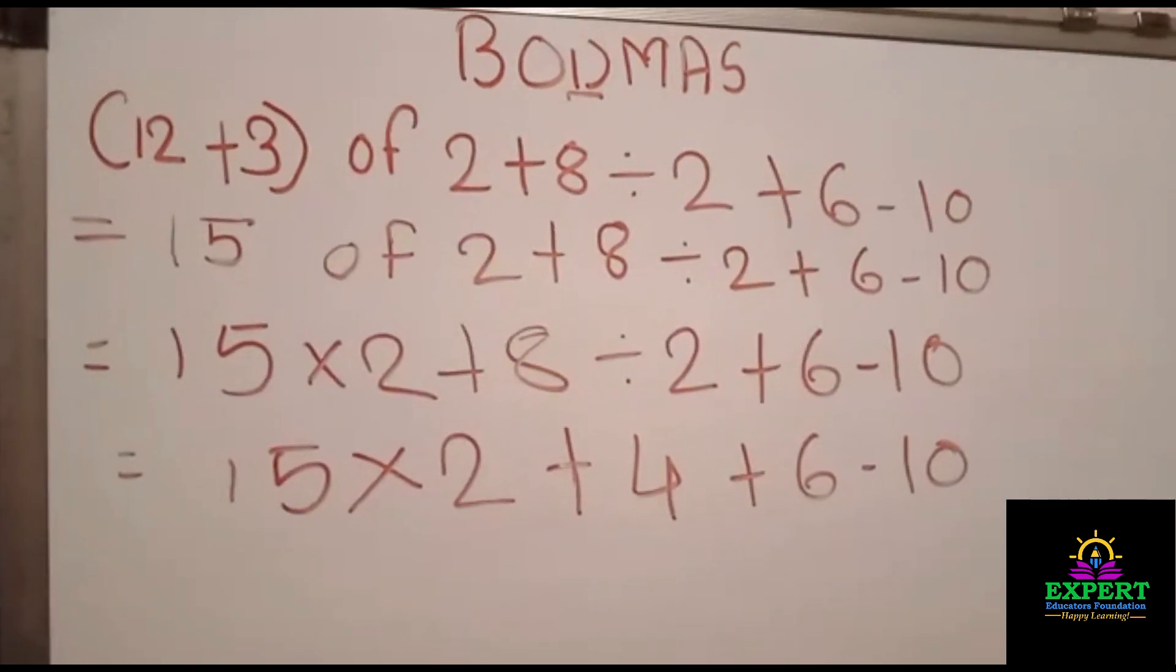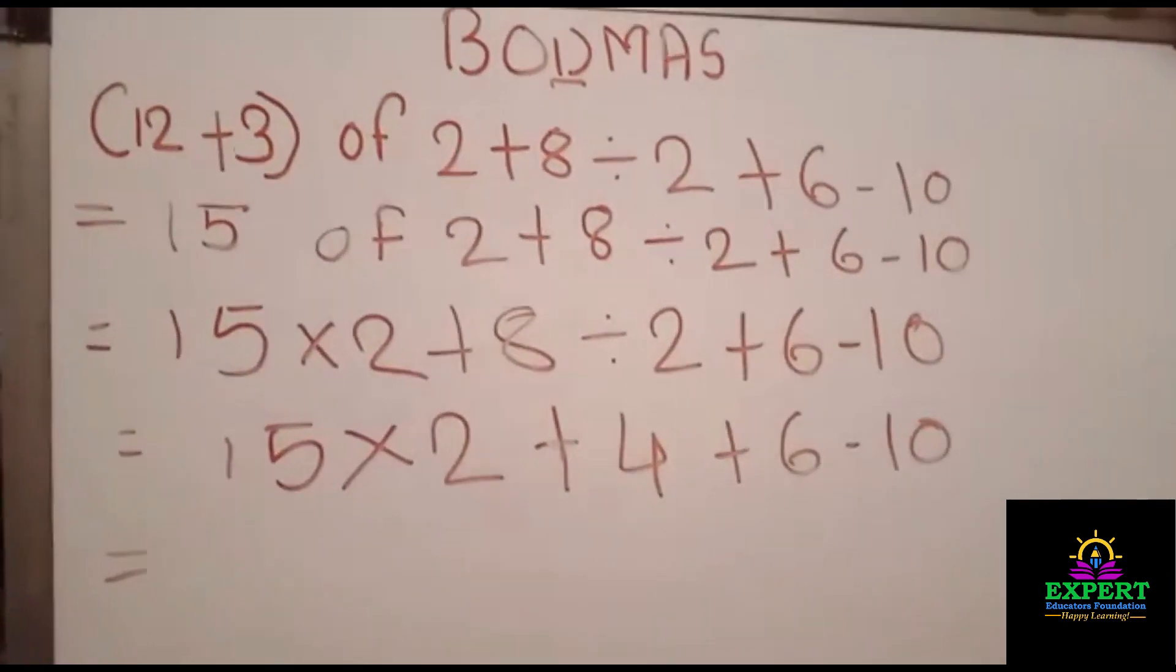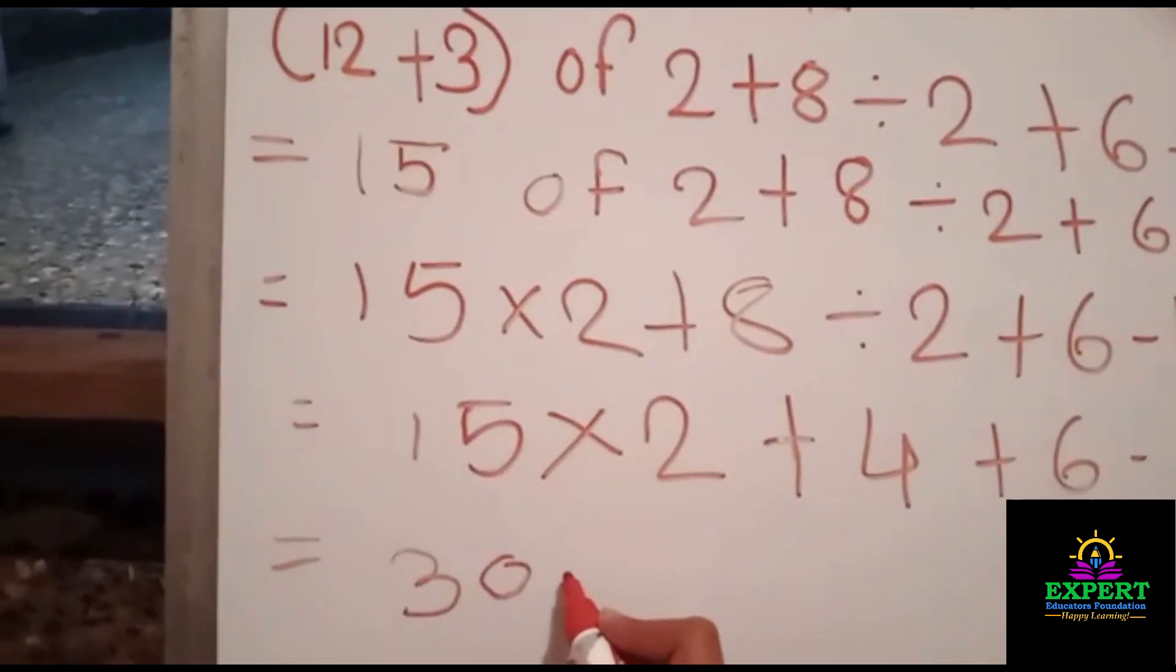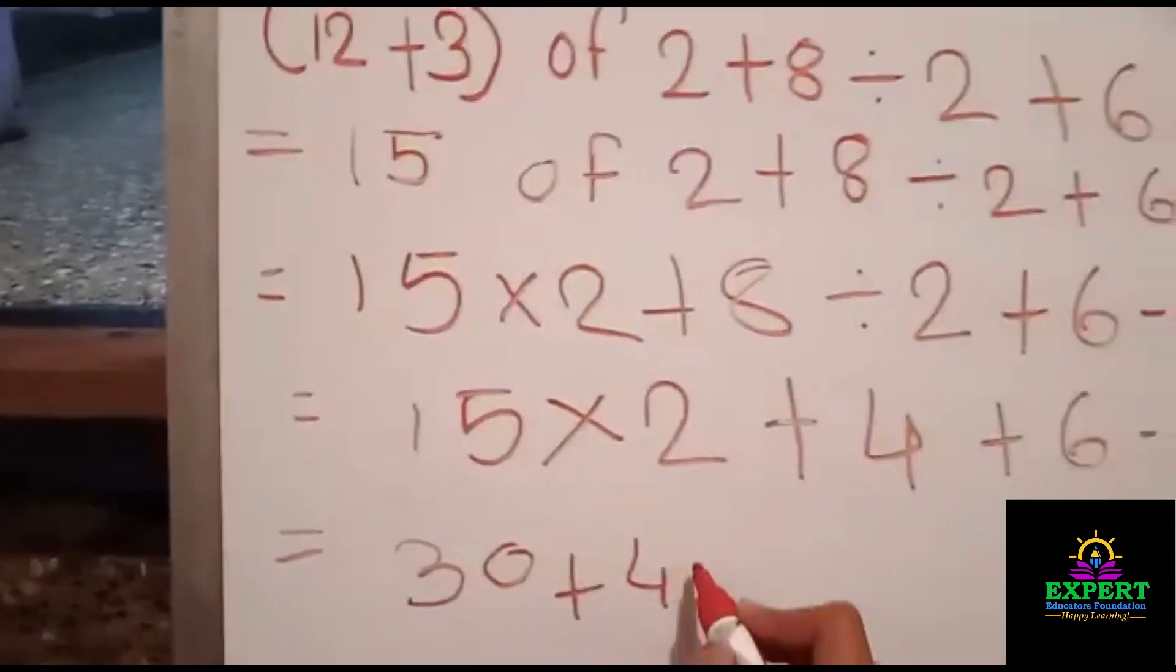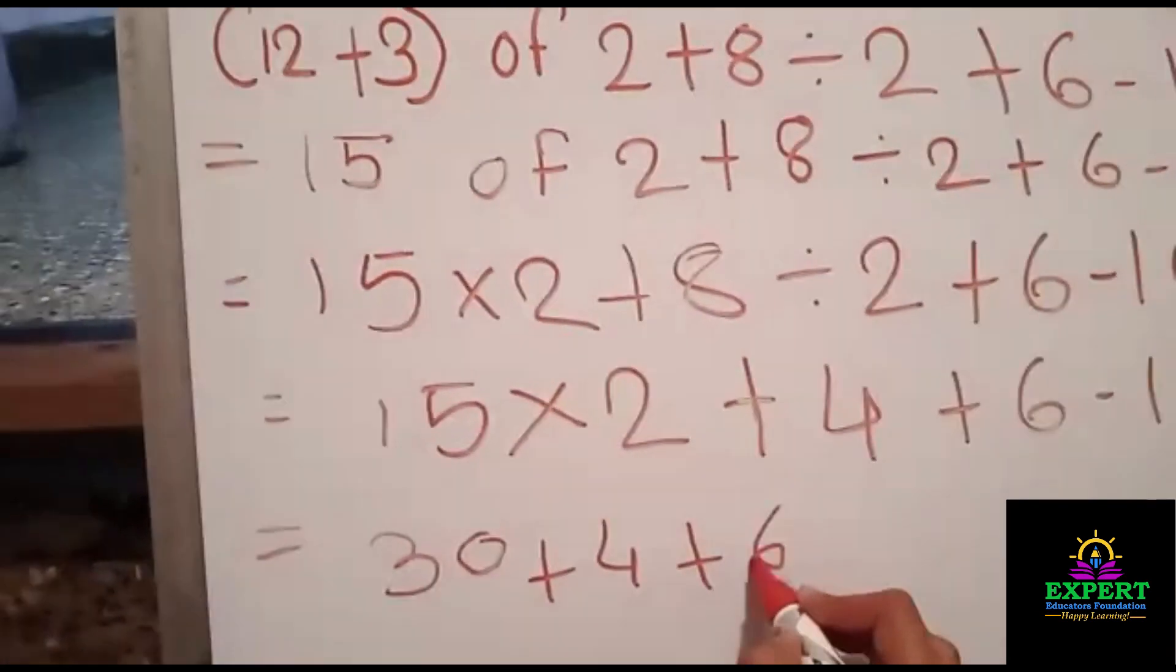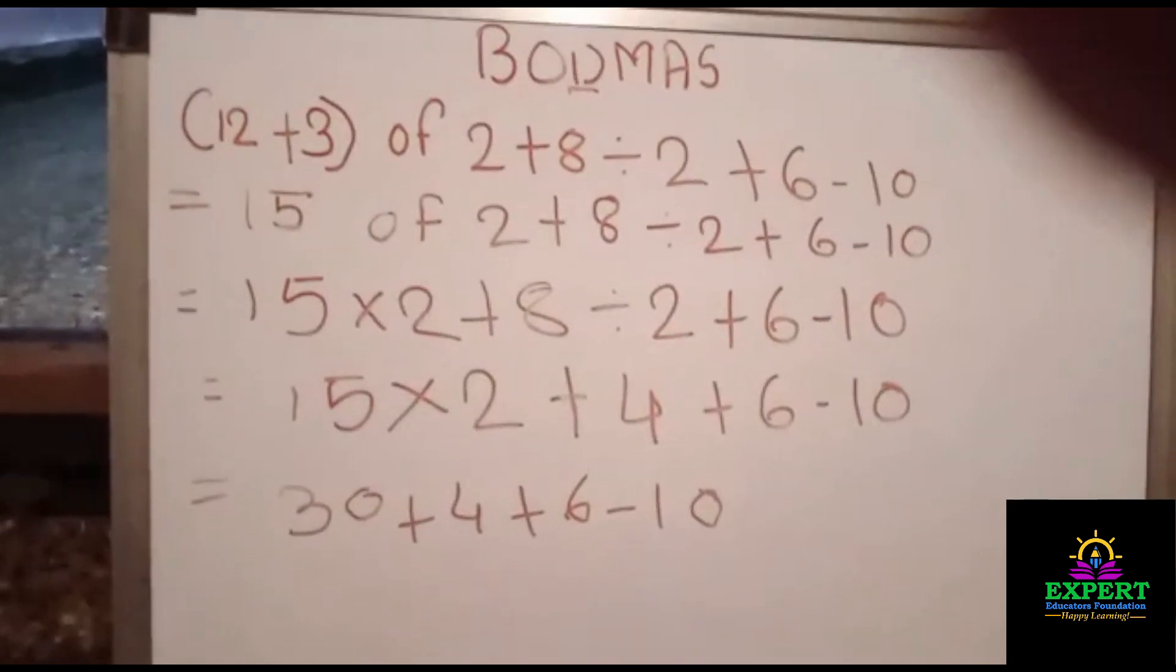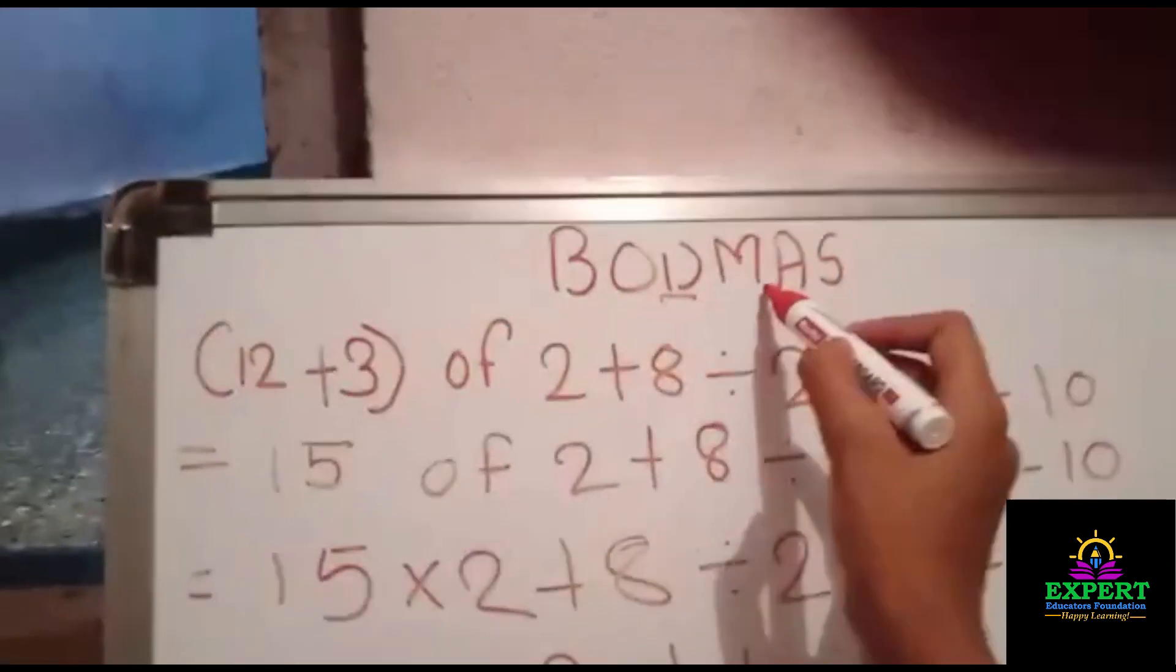Now it is time for multiplication. Now 15 times 2 are 30 plus 4 plus 6 minus 10. It is the time for addition.